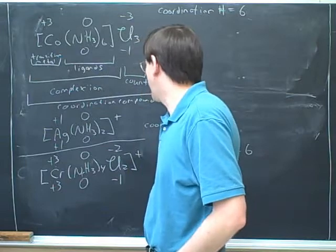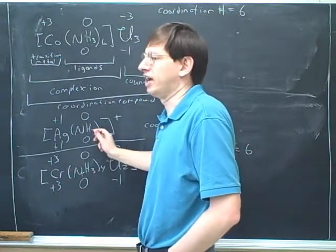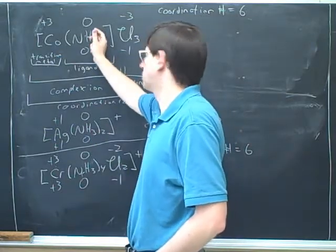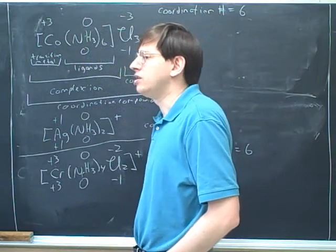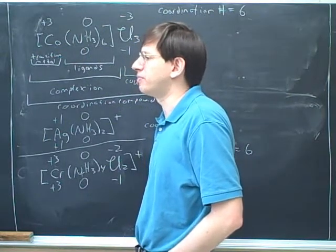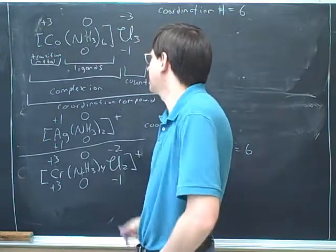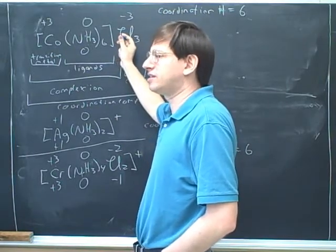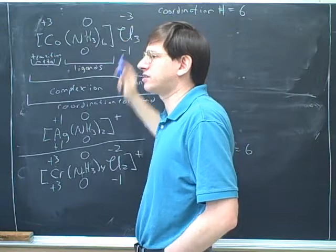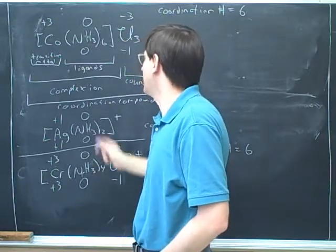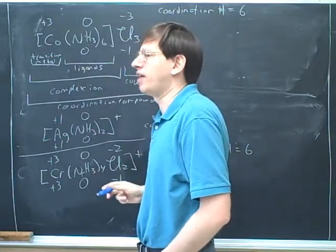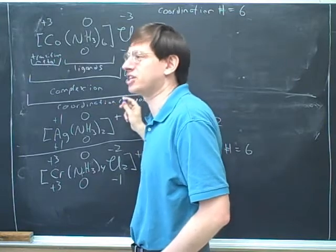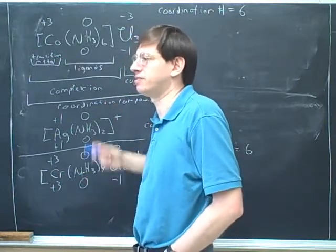So below here we were doing cases where we were only given the complex ion. But we just figured out how to deal with the entire coordination compound as well. Notice that for purposes of oxidation number, it doesn't make any difference whether things are inside or outside of the brackets. We treat a chlorine inside the brackets the same as a chlorine outside the brackets for purposes of finding the oxidation number.